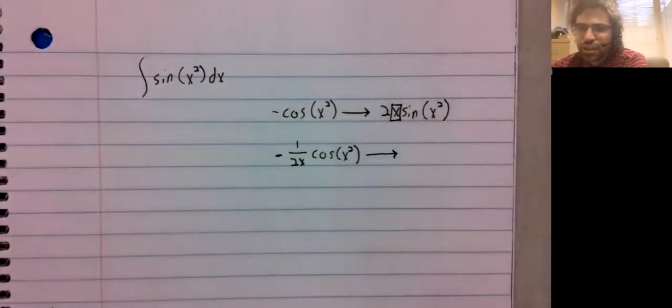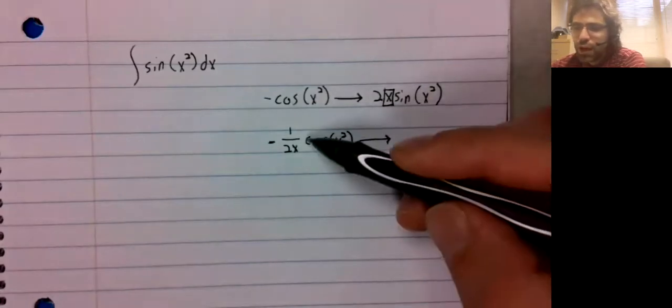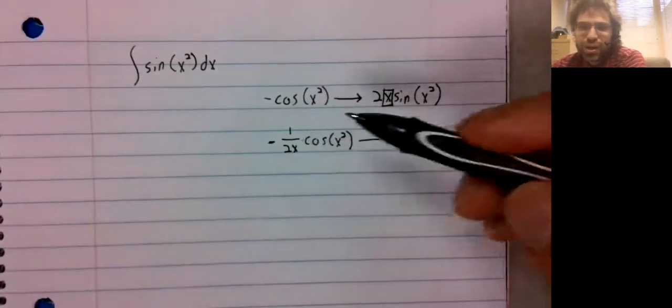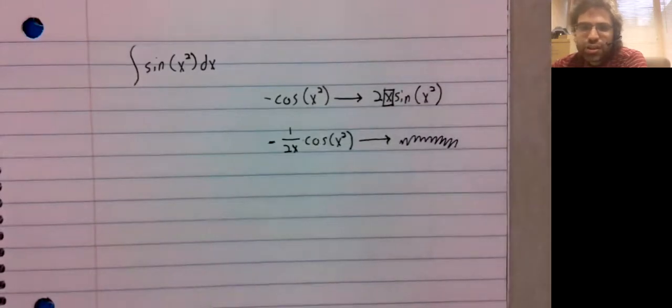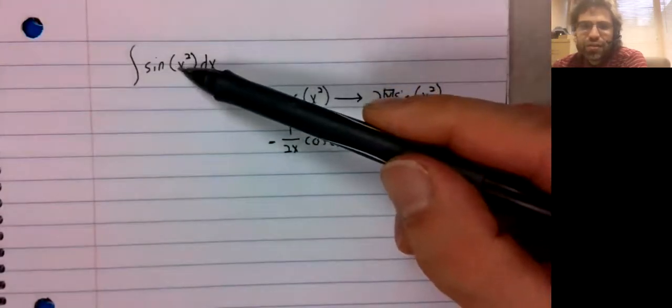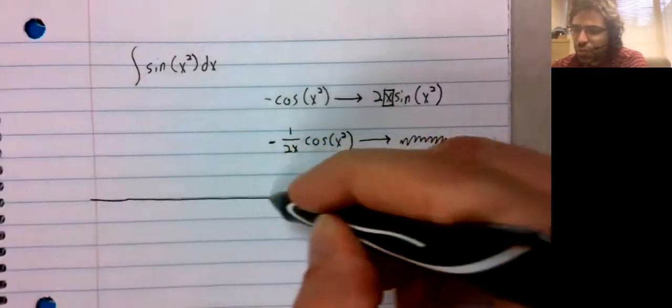If you try to put a one divided by x term out front, it will not carry along. It will require the product rule, and you'll get something very ugly, and not even close to what you're looking for.